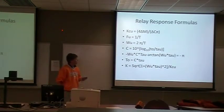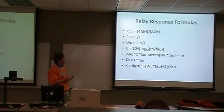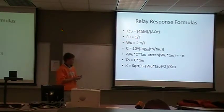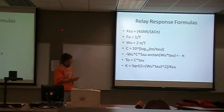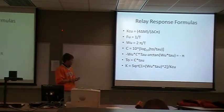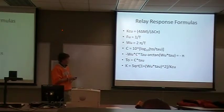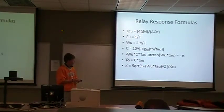Once we had those values, we used these formulas to compute the different parameters. KCU was four times delta M divided by delta C times pi. FU was one over the period. Omega U was two pi over the period. C was ten raised to the log base ten of T-naught over tau. We also used this formula to find tau, and once we found tau, we used another equation to find T-naught, and then we could use all of those to find the K value.